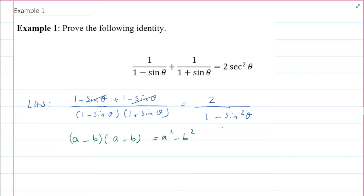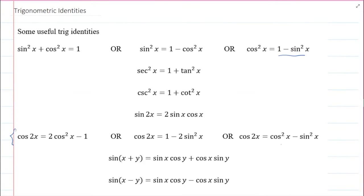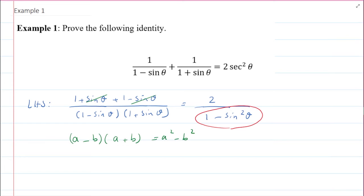Now, you remember this 1 minus sine squared from the previous page that I showed you, 1 minus sine squared is actually cosine squared. So I write 2 over cosine squared of theta. And technically, I have 1 over cosine squared, which is secant, so that would be 2 secant squared of theta. And this would be your right hand side. So we started from left hand side, we used identities, we simplified, and we got to the right hand side. So we proved this identity.